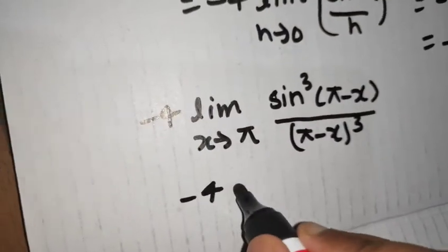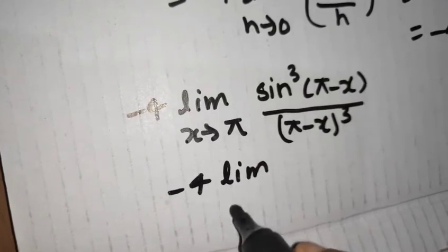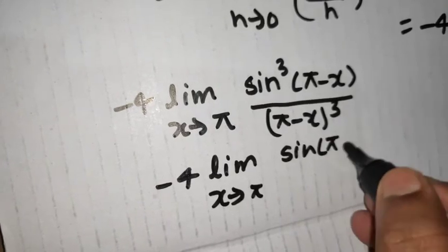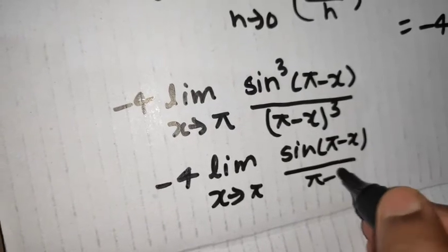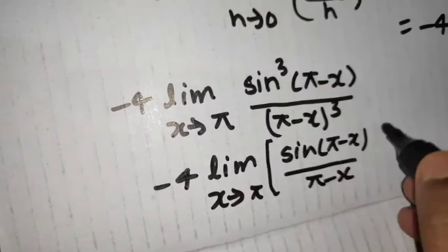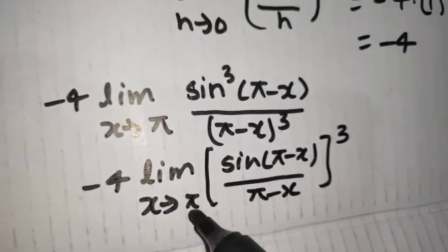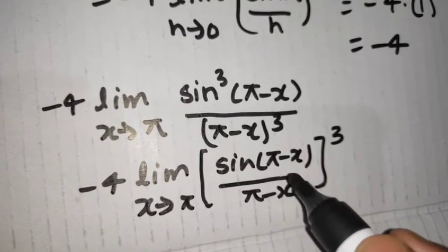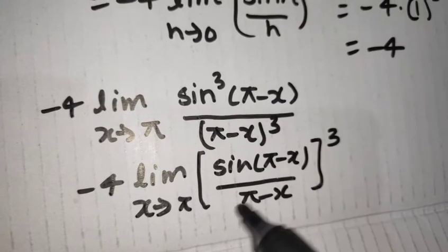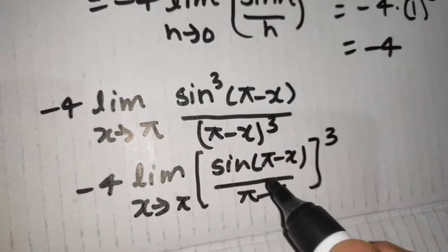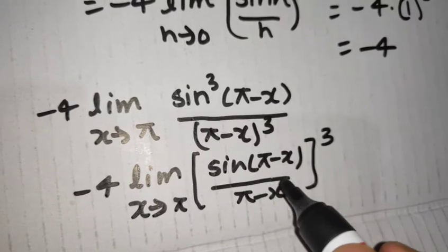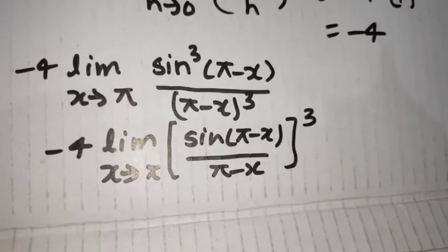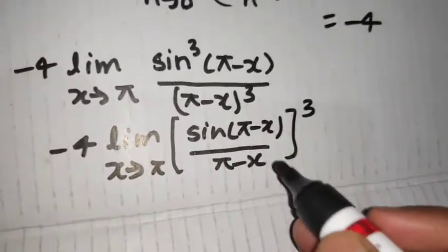Now limit x tending to pi. This would have been written as sin of pi minus x divided by pi minus x the whole cube. Now at x tending to pi this thing would have given you 1.